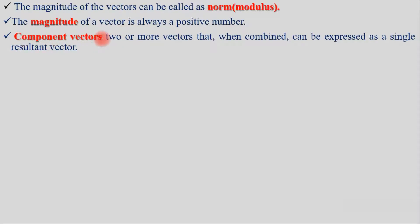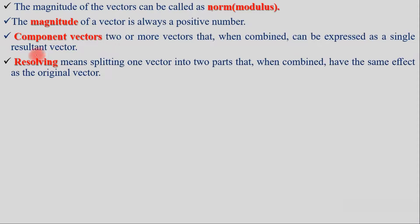Component vectors are two or more vectors that, when combined, can be expressed as a single resultant vector. Resolving a vector means splitting one vector into two component parts that, when combined, have the same effect as the original vector.